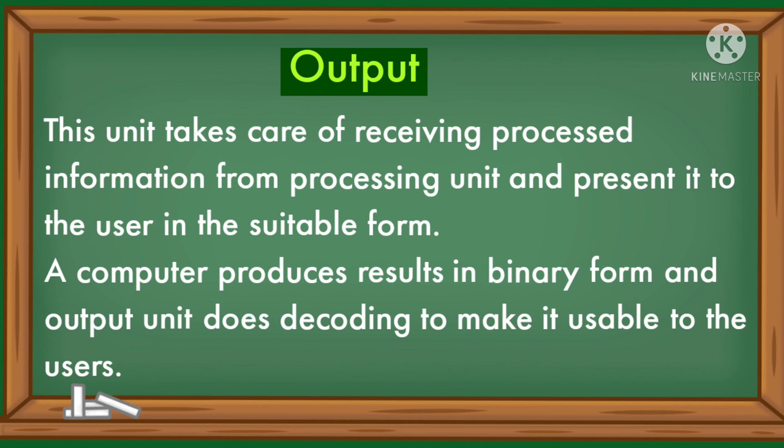The output unit takes care of receiving processed information from the processing unit and presenting it to the user in a suitable form. A computer produces results in binary form, and the output unit does decoding to make it usable to the users.